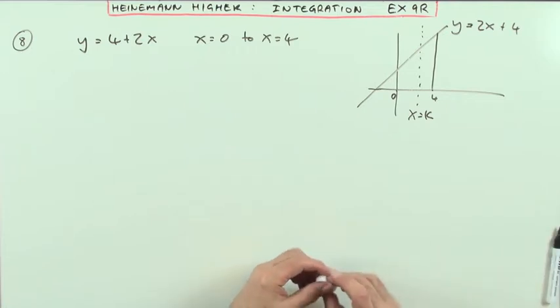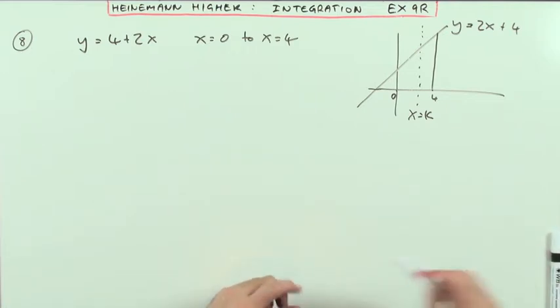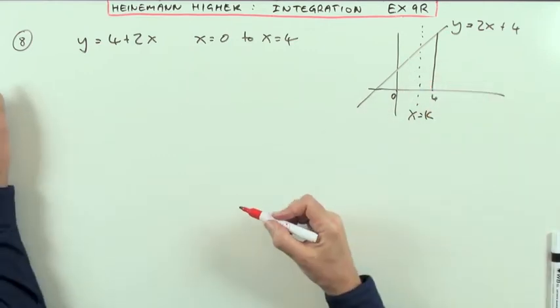Well, that's what it means. It splits the area into two equal parts, two equal areas, which means the areas should be the same for the two parts.